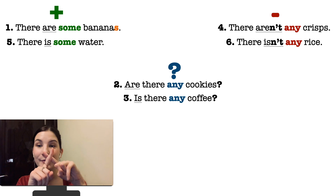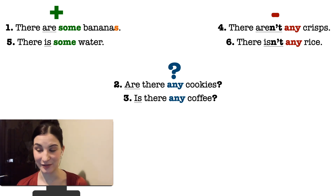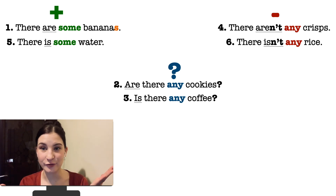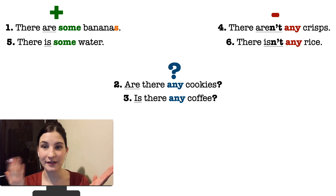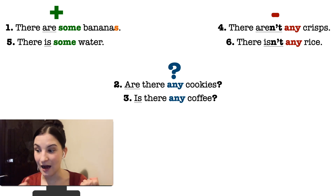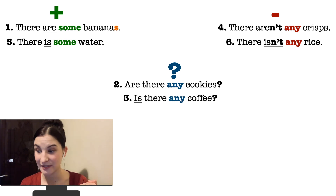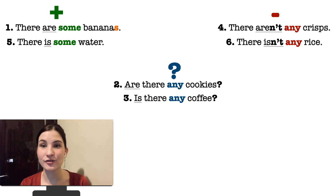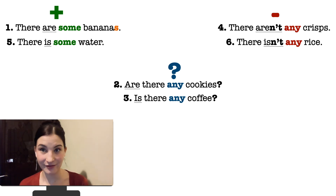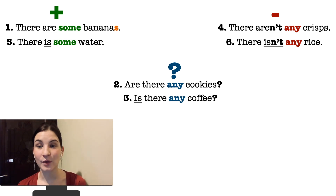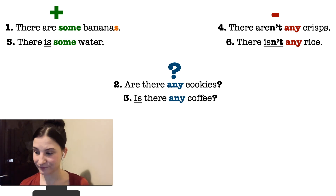Now look at the affirmative sentences — утвердительные предложения. Bananas: countable or uncountable? What about water? Uncountable. Look at the negative sentences — отрицательные. Crisps: countable. That's why we say 'aren't any crisps'. And rice: uncountable. That's why we say 'isn't any rice', because we cannot say 'are' with uncountable. Look at the interrogative sentences. Cookies: countable — that's why we ask 'Are there any cookies?' And coffee: uncountable — that's why we use 'is'.